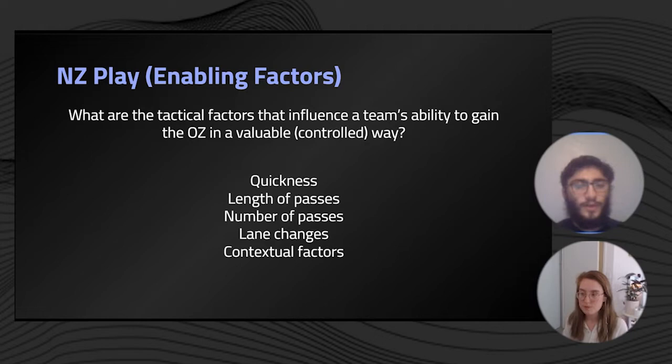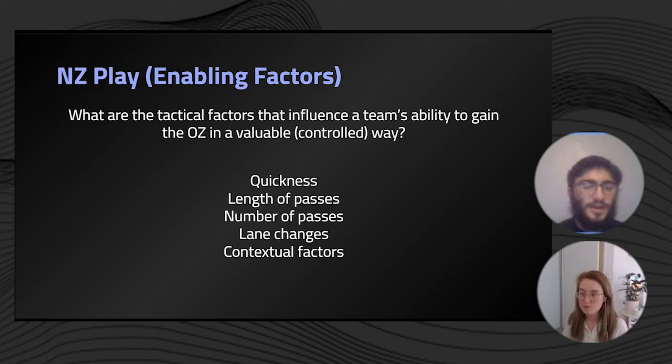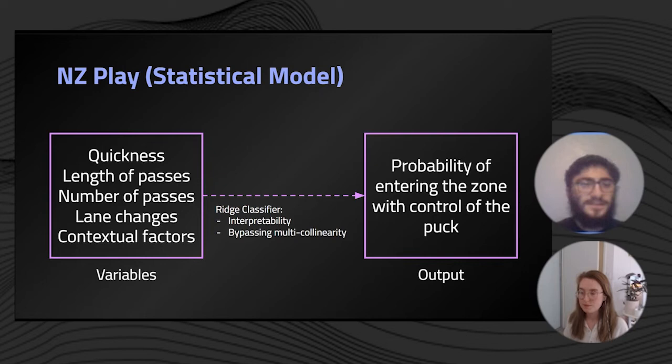These five characteristics include: the quickness of neutral zone sequences — that is, the time spent in the neutral zone; the average length of passes in a sequence; the number of passes in a sequence; whether there are any lane changes within that sequence; and contextual factors which help us differentiate neutral zone regroup situations, where the team is facing a neutral zone forecheck, as opposed to more traditional D-zone to O-zone transition where the opposition is most likely backtracking.